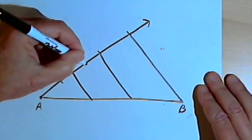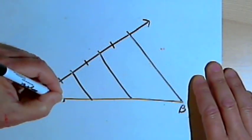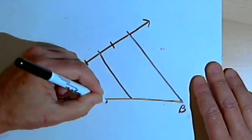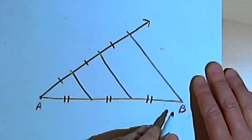So that means I've got three congruent segments that I created along the ray, and I'll also have three congruent segments, three equal segments, along line segment AB.